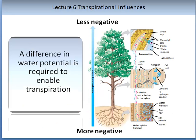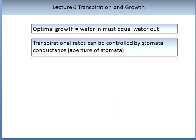In order for transpiration to occur in plants, a difference in water potential is required. The value in the soil needs to be more negative than the value in the air. For optimal growth to occur in a plant, the water in must equal the water out, and therefore transpiration is exceptionally important in optimal growth.